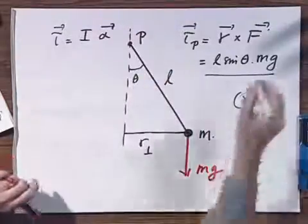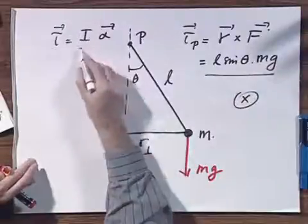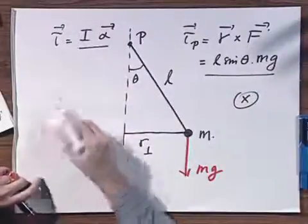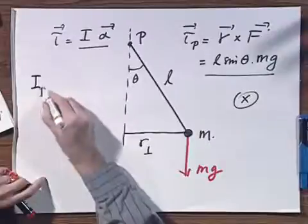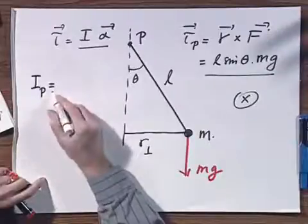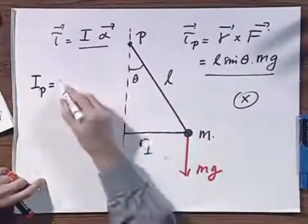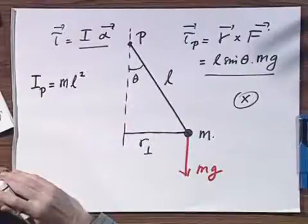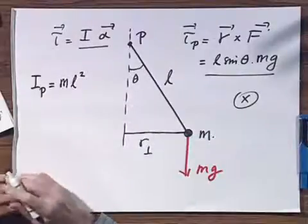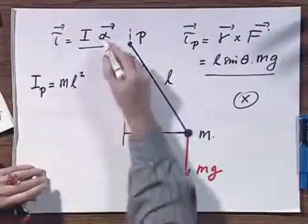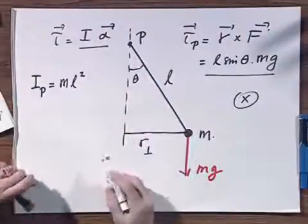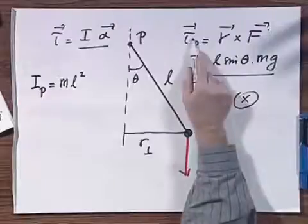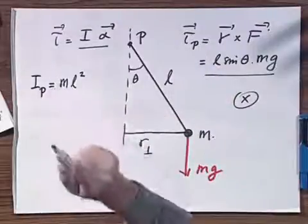Think of it as an axis going like this. Now, this torque also equals I alpha. And I relative to point P is totally trivial. That is ML squared. That's the definition of moment of inertia. And alpha is theta double dot. So I can write down this one being equal to that. But before I do that...